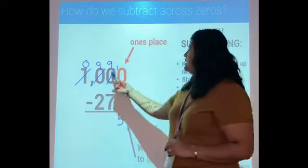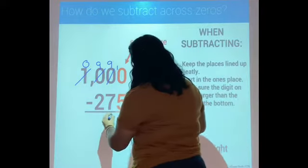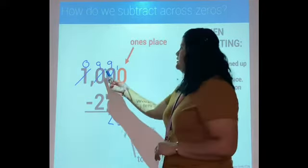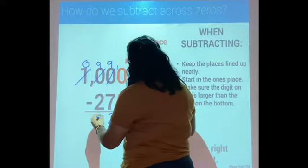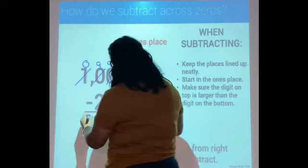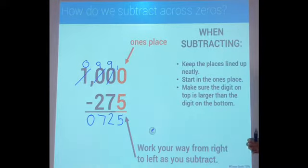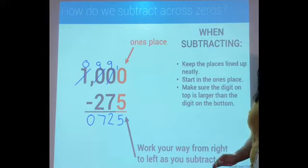Five. Nine minus seven - two. Nine minus two - seven. And zero minus nothing? That would just be zero. So our answer is 725.